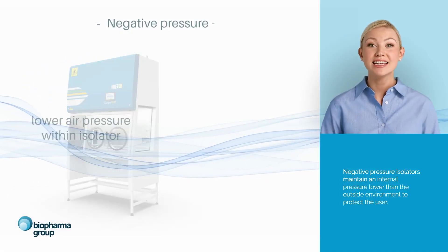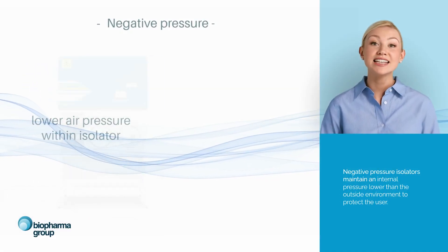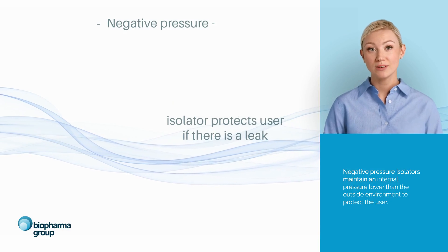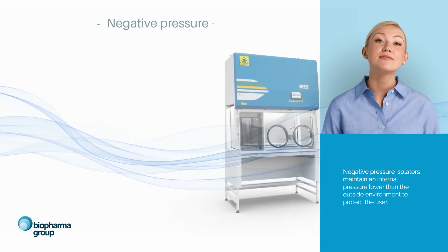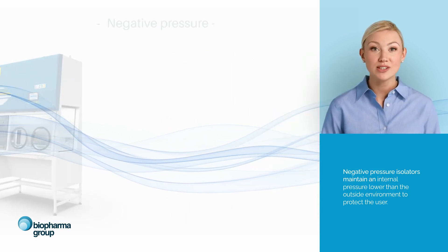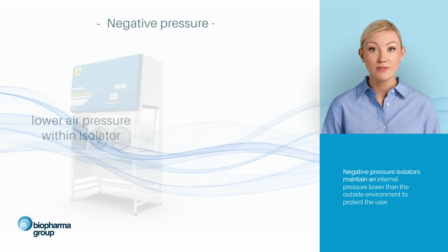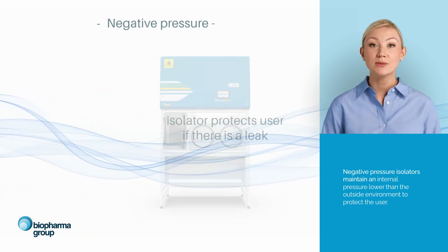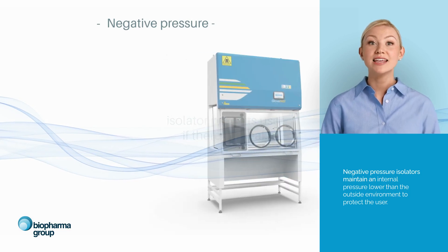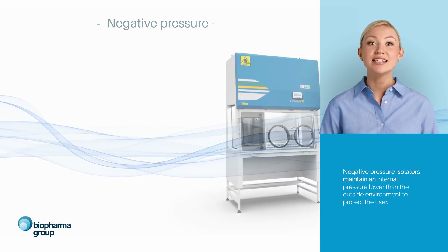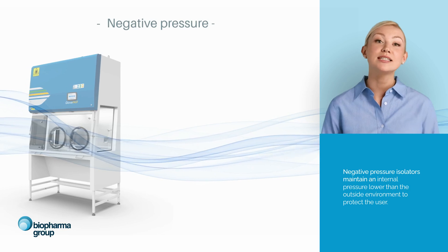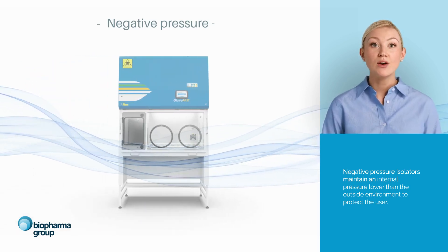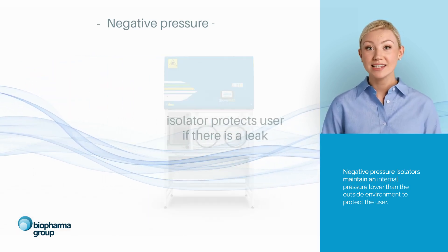Negative pressure isolators maintain an internal pressure lower than the outside laboratory environment. As a result, they can minimize airborne toxins from escaping into the clean room environment, as air will flow into the isolator because of the lower pressure. Negative pressure isolators are designed to protect both the material being manipulated from contamination and the operator from hazardous substances.